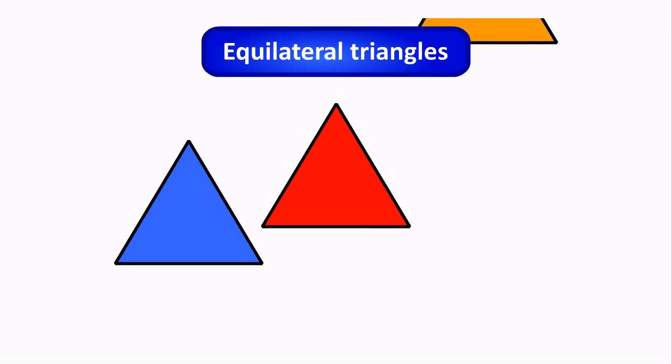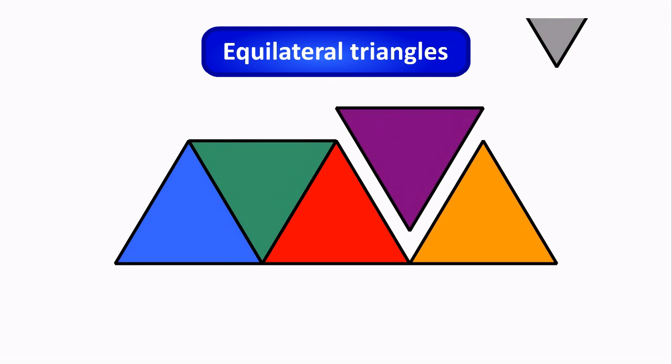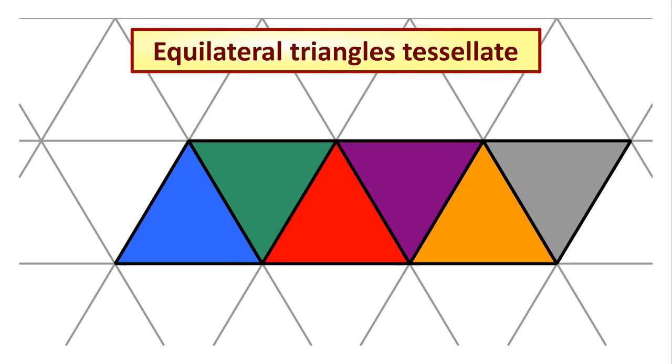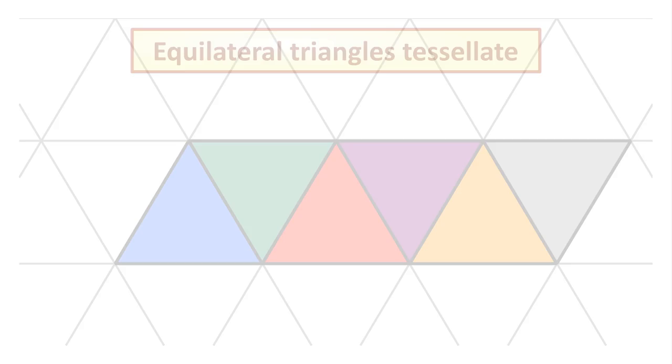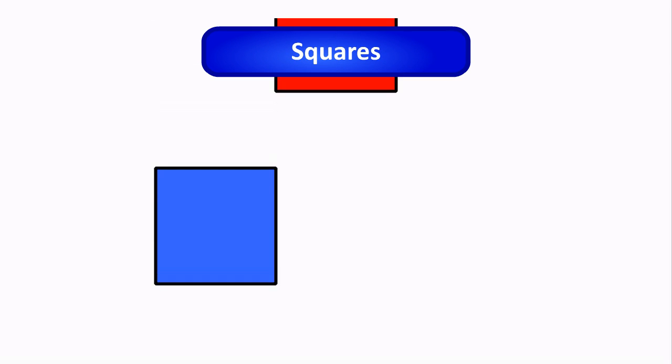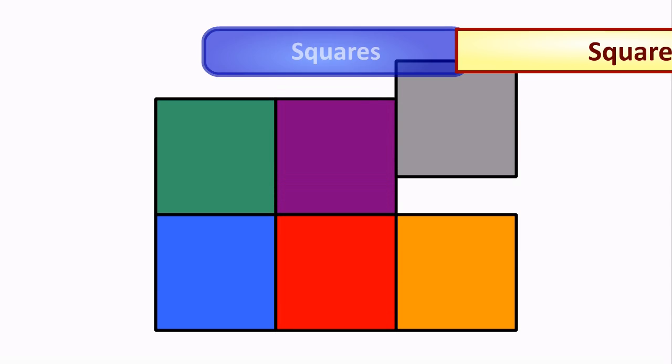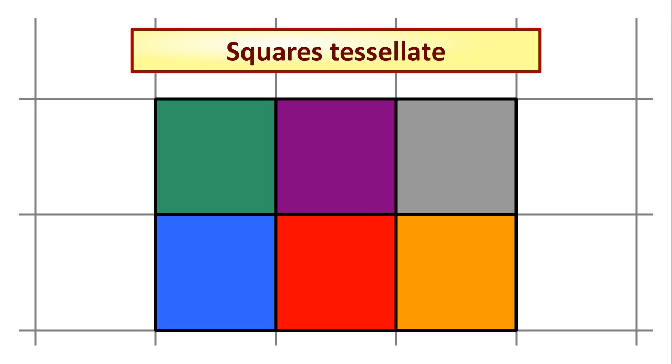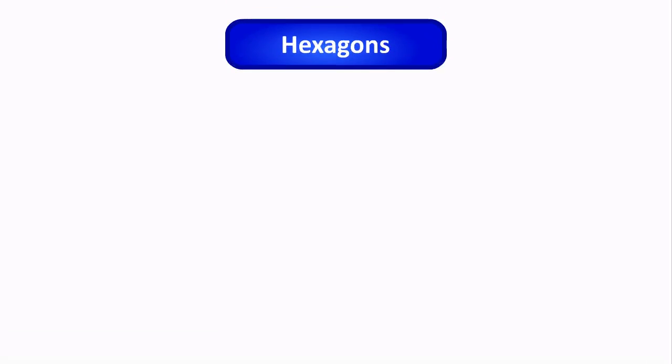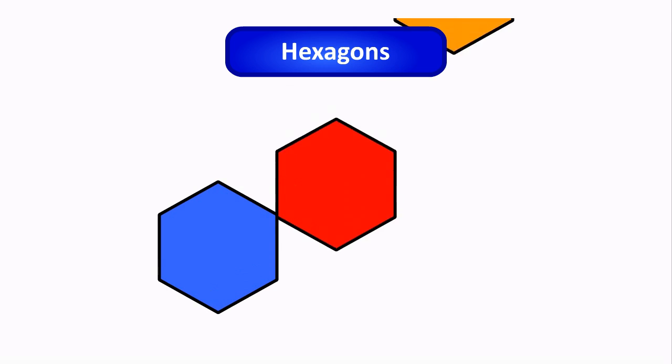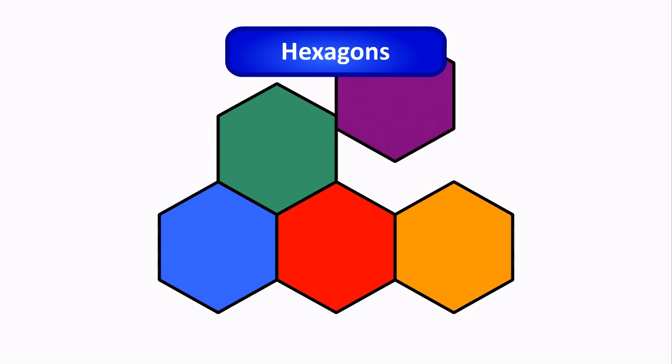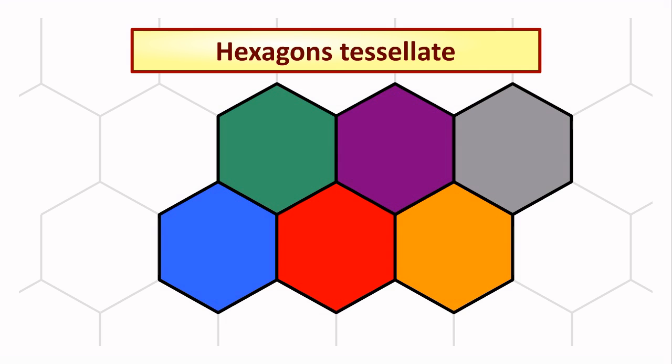The first type are equilateral triangles. Equilateral triangles tessellate. The second type are squares. Squares tessellate. The final type are hexagons. Regular hexagons also tessellate.